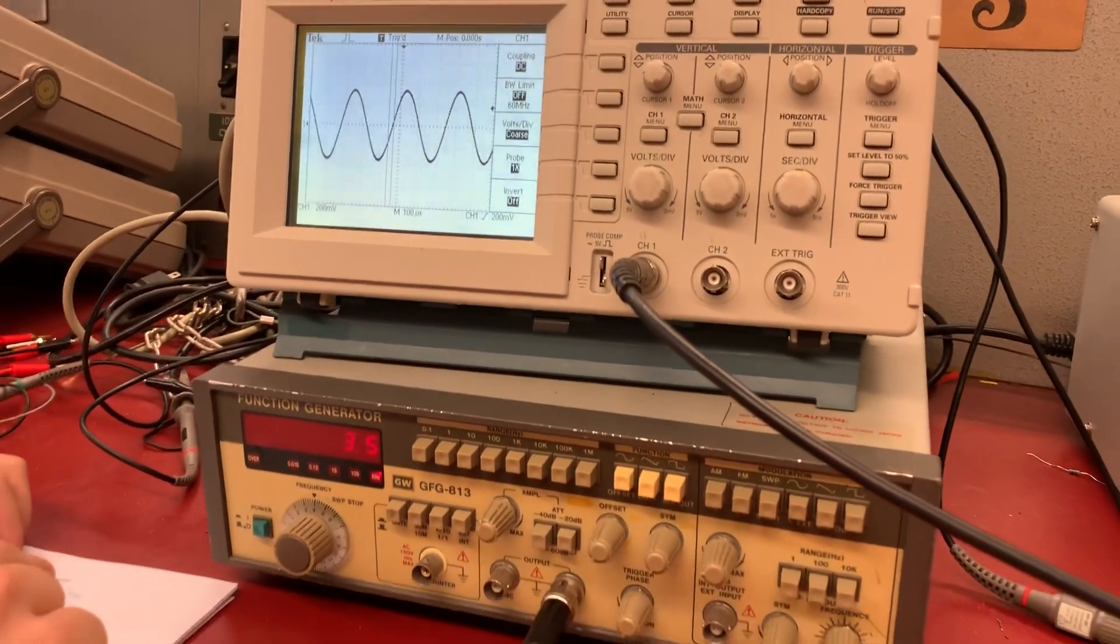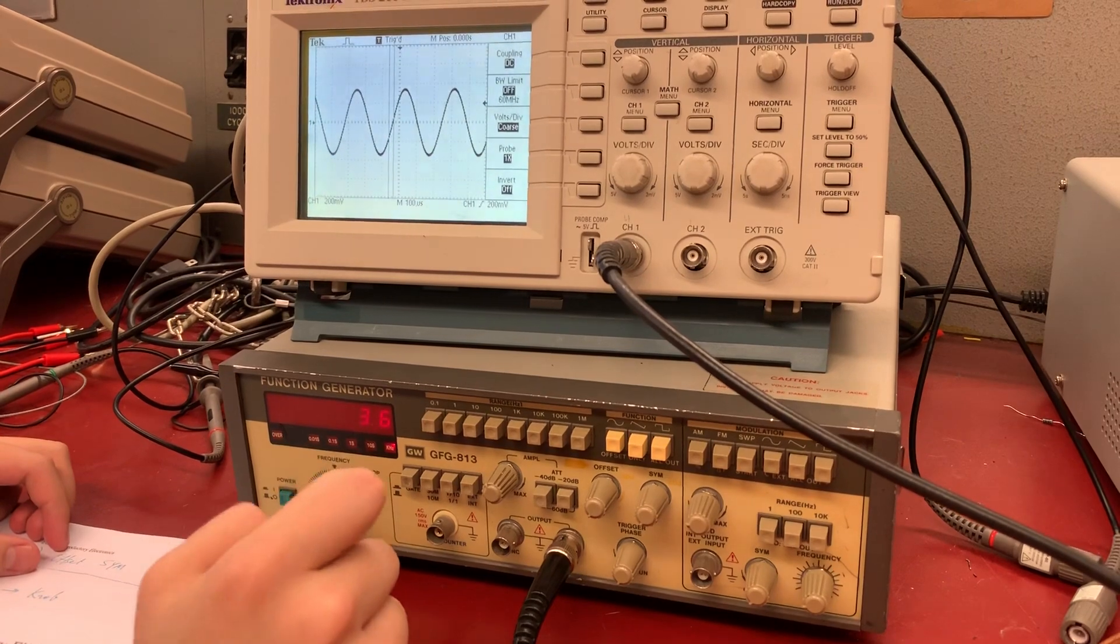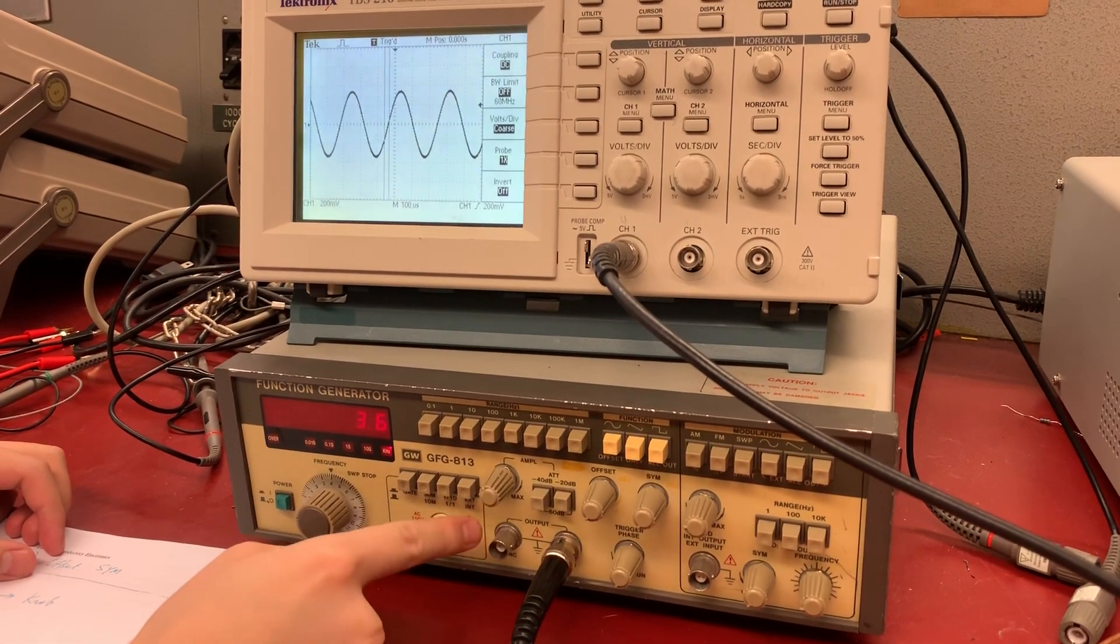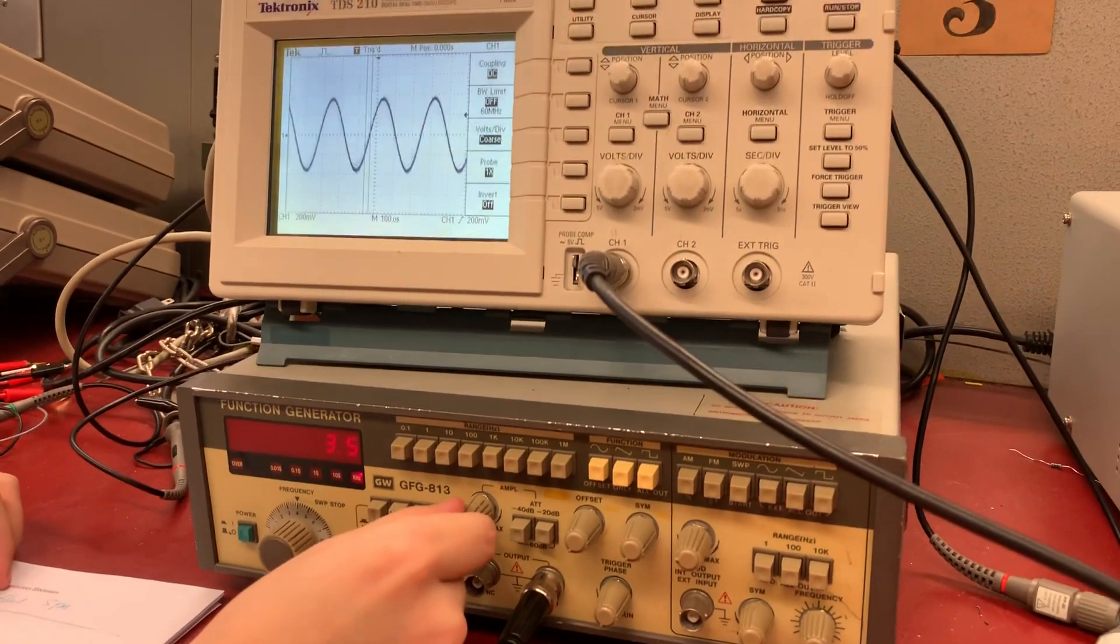Once the sinusoidal wave is selected, the next thing is the amplitude that we can tweak. You see this amplitude knob - we can tweak it to make the signal larger or smaller.